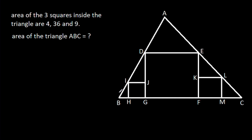In this video, we have been given the area of 3 squares inside the triangle: 4, 36, and 9. We have to find the area of triangle ABC.